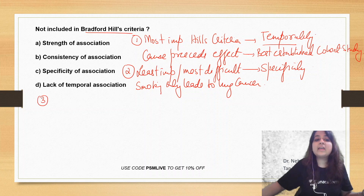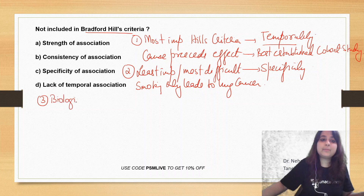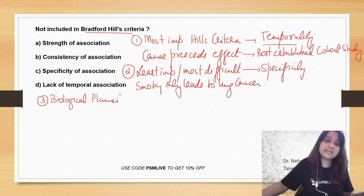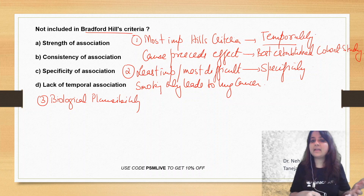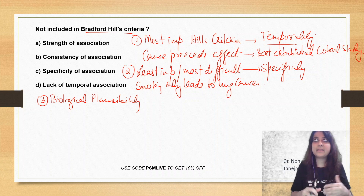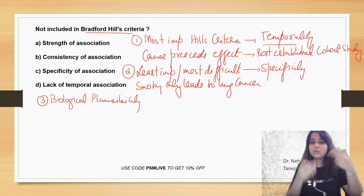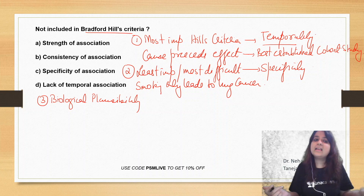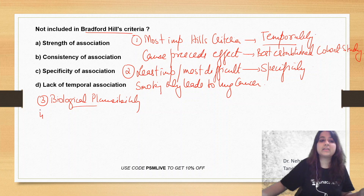Then go in alphabetical order. The next one is B — biological plausibility. What is biological plausibility? Whatever you say should be supported by a biological backup. For example, if we say smoking causes lung cancer, when you smoke it causes inflammation of the lung parenchyma. So that is biological plausibility.